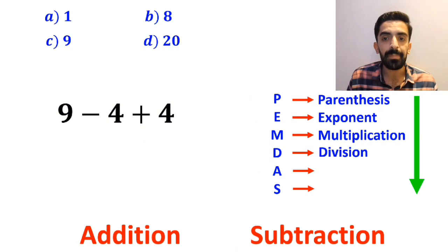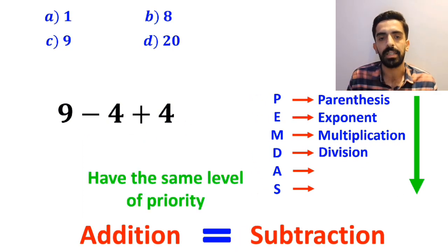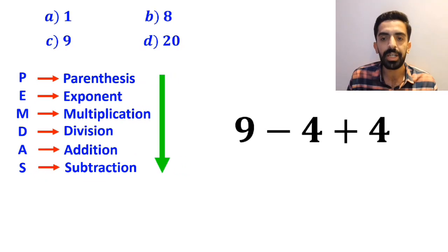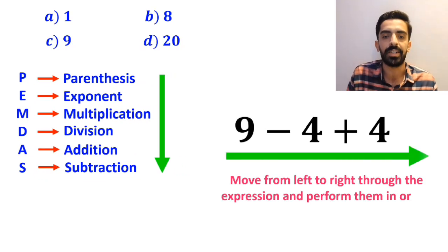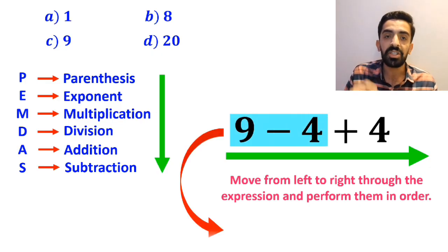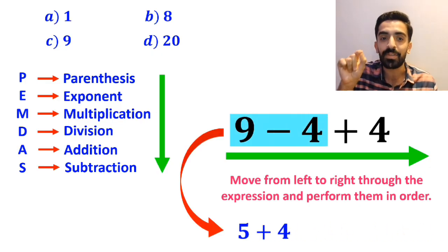Once again, we should remember that addition and subtraction also have the same level of priority. And the best thing to do here is to move from left to right through the expression and perform them in order. So, first we do the subtraction between 9 and 4, which simplifies the expression to 5 plus 4.